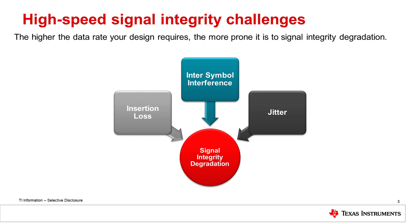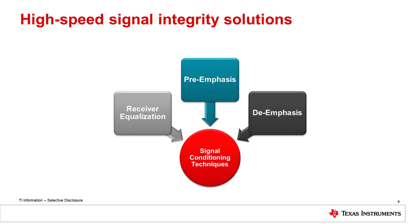In this video, we will discuss identifying three main factors of signal integrity degradation: insertion loss, inter-symbol interference, and jitter. Three primary ways we combat signal integrity degradation are signal conditioning techniques such as receiver equalization, pre-emphasis, and de-emphasis. There are many other factors such as signal reflections, duty cycle distortion, and crosstalk, as well as additional techniques like clock data recovery and decision feedback equalizers. These topics will be saved for later videos.